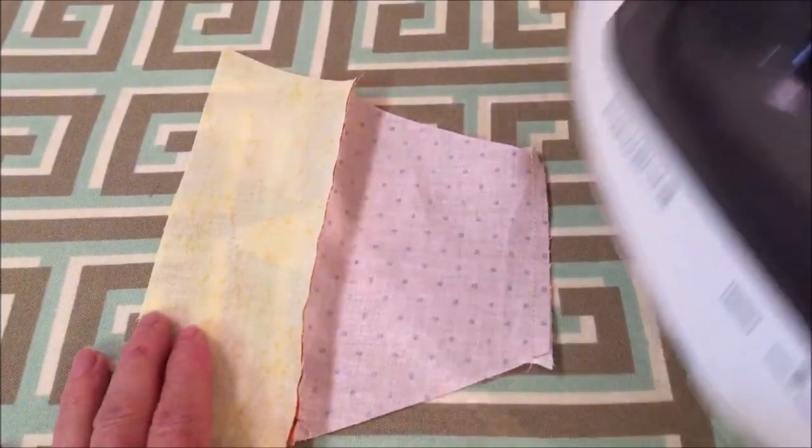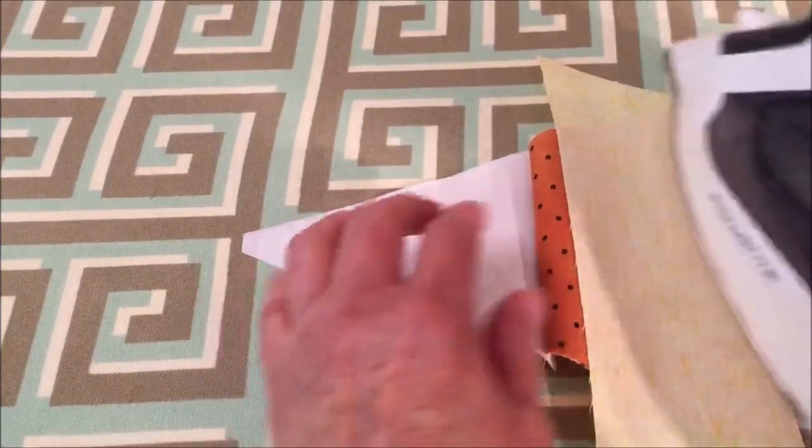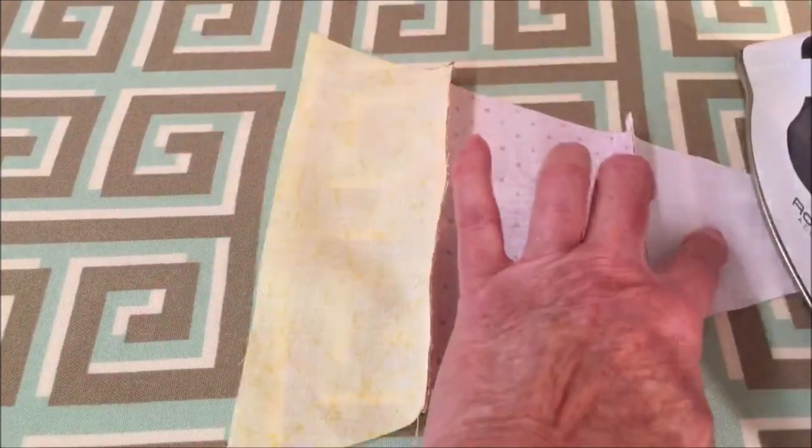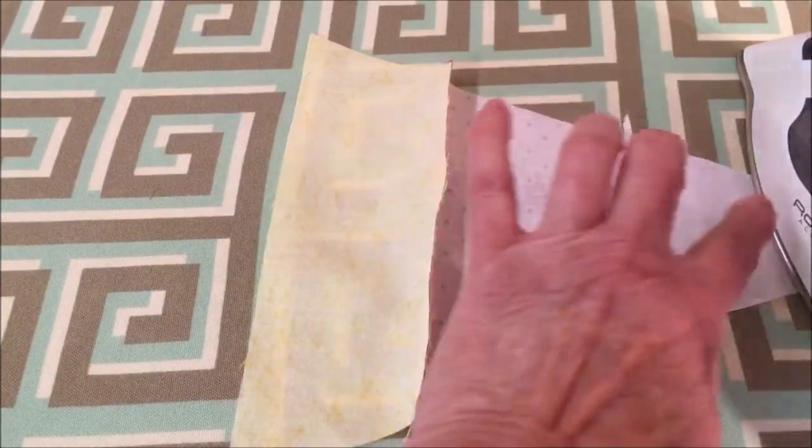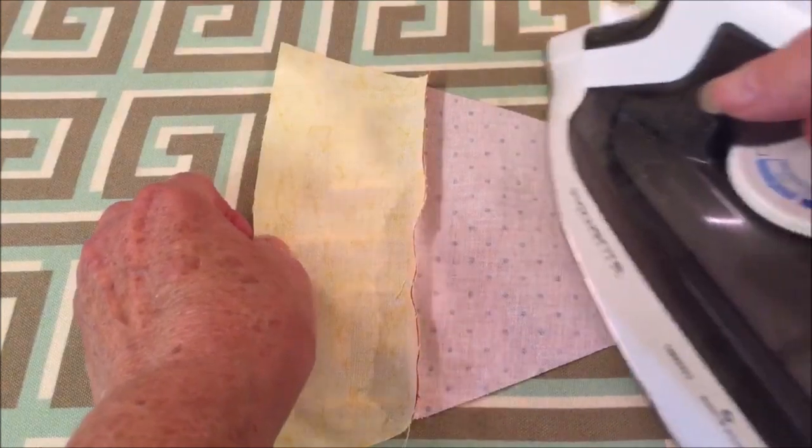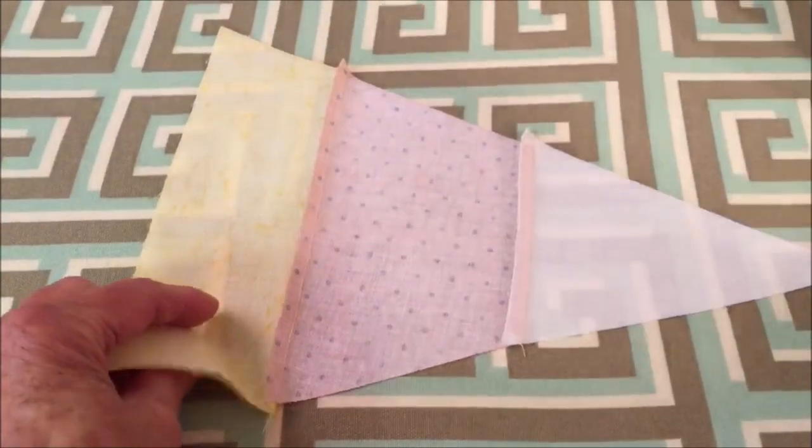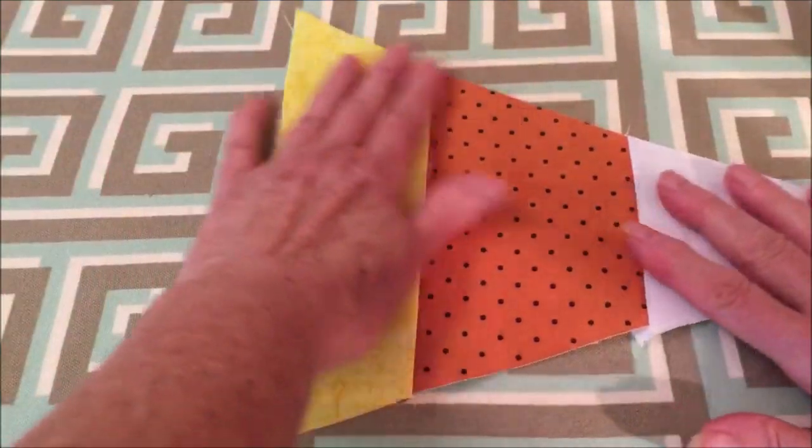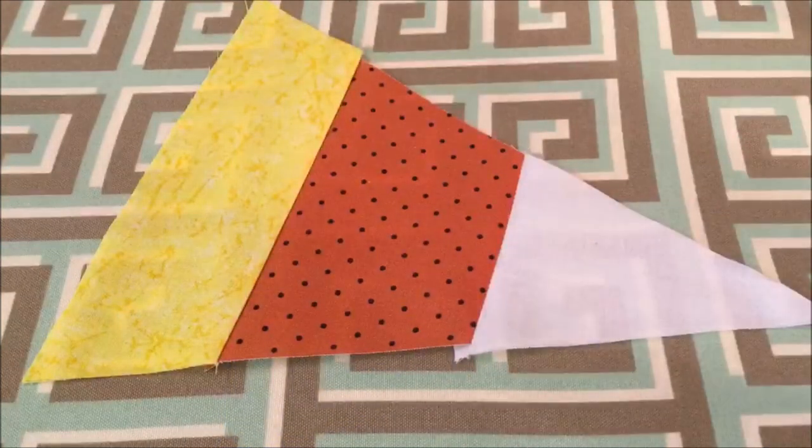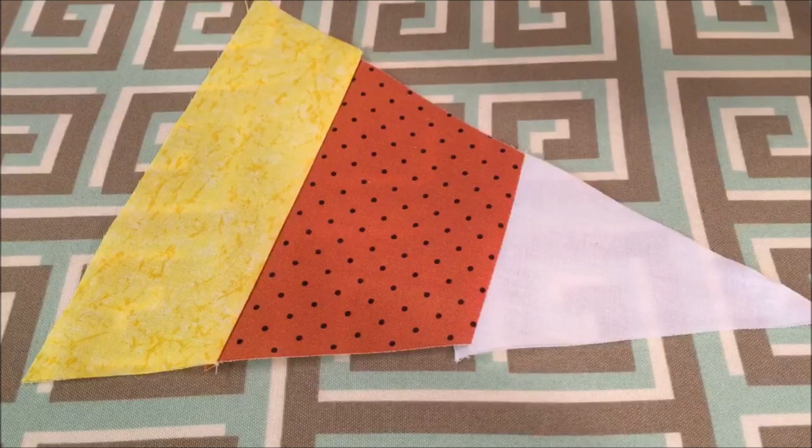When you finish sewing all the pieces together it's time to press it. Now I recommend that you definitely press the seam at the white to the inside so it won't show. But the yellow one I'm going to press it all in the same direction. Turn it over and press the right side. The candy corn piece is finished. Now we have to put the backing on so let me show you how to do that.